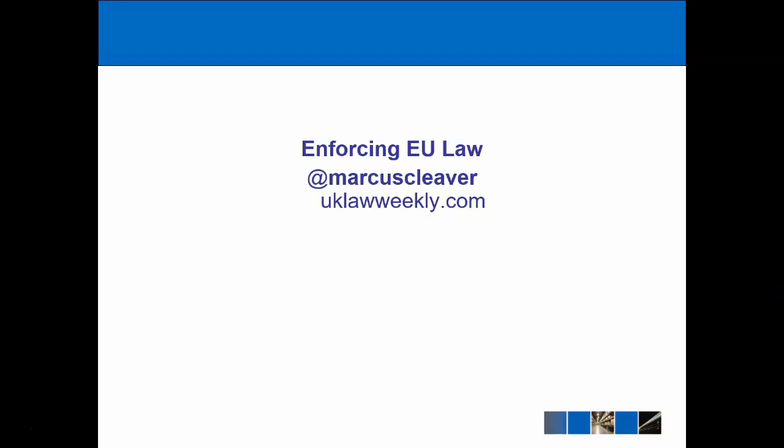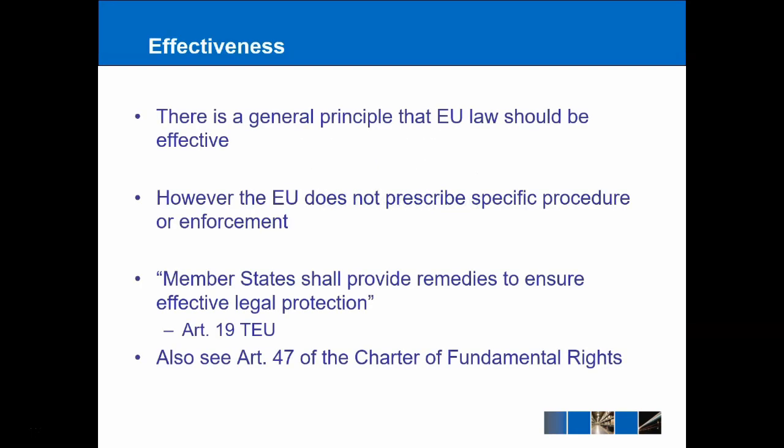The starting point here is a very simple principle of EU law called effectiveness. This tells us that EU law should literally be effective — in other words, if I have a right under EU law, then I should have some way of enforcing that right. The problem is that the EU themselves don't specify any particular procedure or method of enforcement. Instead, we can look to Article 19 of the Treaty on the European Union, which tells us that member states shall provide remedies to ensure effective legal protection — it's up to the national governments to provide some way of enforcing EU rights.